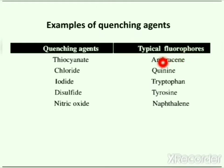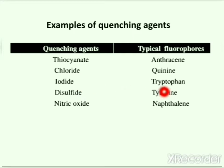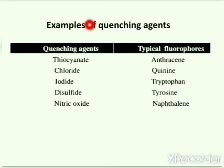Quenching in anthracene occurs due to the presence of thiocyanate; in quinine due to the presence of chloride; tryptophan in the presence of iodide; tyrosine in the presence of disulfide; and naphthalene in the presence of nitric oxide. These are the quenching agents and these are the corresponding fluorescent substances.